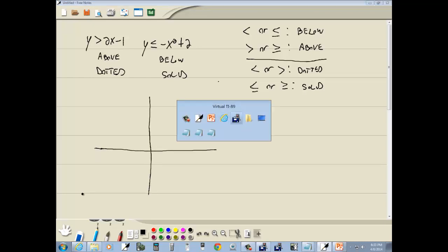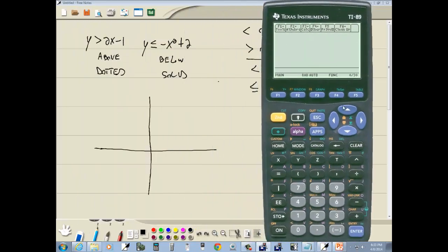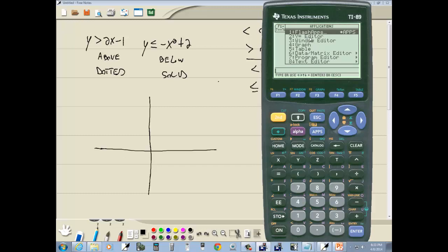Let's go plug these in our calculator and see what we get. I can press my apps and choose the y equals editor. So I press 2 to get into that. I have y1 here. I'm going to put 2x minus 1 on y1. Press enter.